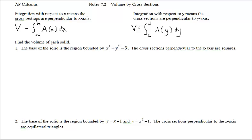To find the volume of this solid, we have to pay attention to what the base region is — that's like our floor plan. The base of the solid is the region bounded by this equation, so one of the things you might want to do is first get a visual. Let's graph x² + y² = 9, which is a circle with radius 3.